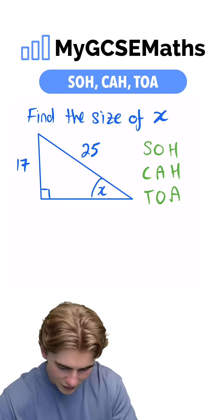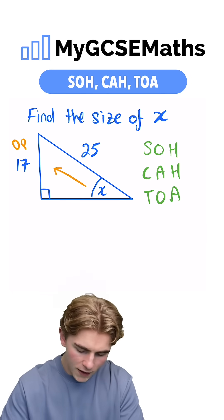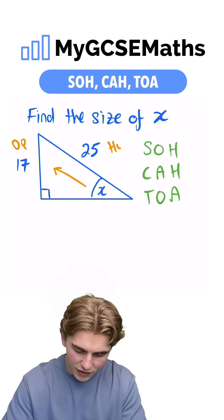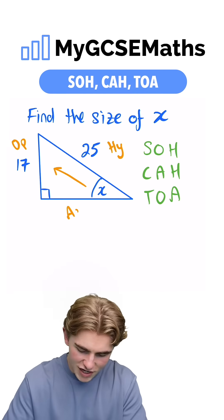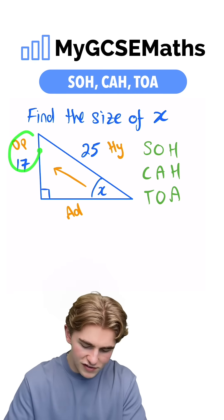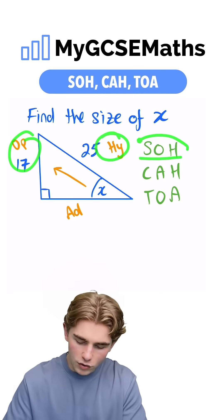Let's label our side lengths opposite the angle. We have the opposite side. Opposite the right angle, we have the hypotenuse, and the other side is the adjacent. In this question, we're dealing with the opposite and the hypotenuse, so we're going to use SOH.